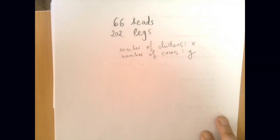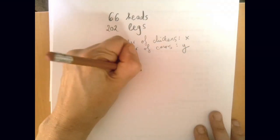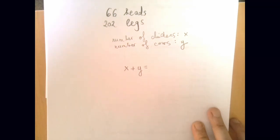One equation will express the number of heads, the other will express the number of legs. How many chicken heads? We have x many chicken heads and y many cow heads, and that's altogether 66.